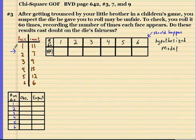If what really happened is a lot different from what should happen, then the die would be unfair. So, we're going to set up our null hypothesis. This would be that the die is fair, and the alternative would be the die is unfair.